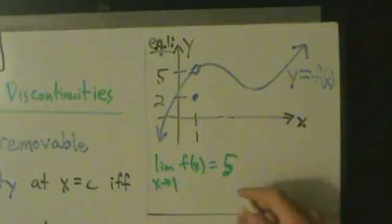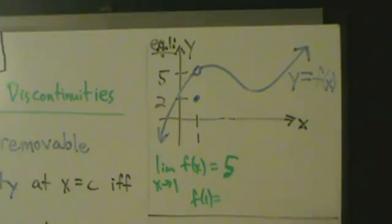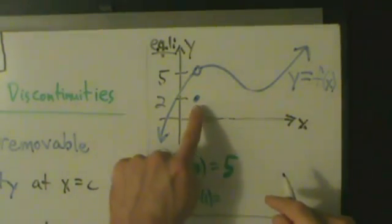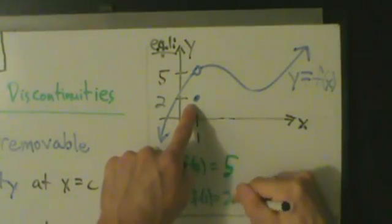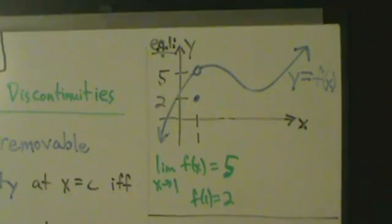But what is f(1)? f(1) equals 2. Okay, when x is 1, the actual y-coordinate is 2. So this is an example of a removable discontinuity.